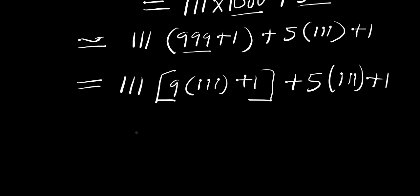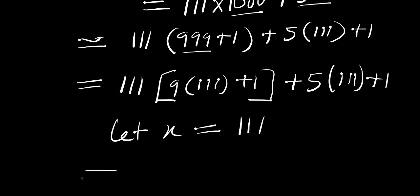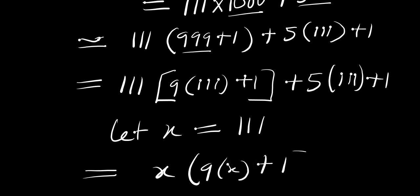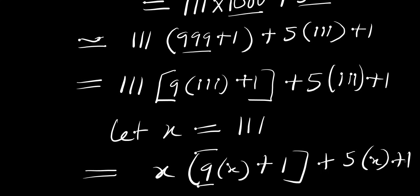Now let x equal 111. We reduce the whole expression to: x times (9x plus 1) plus 5 times (x plus 1).